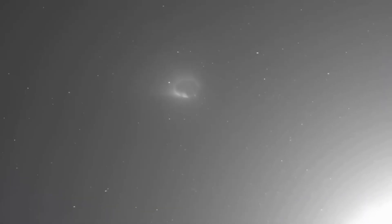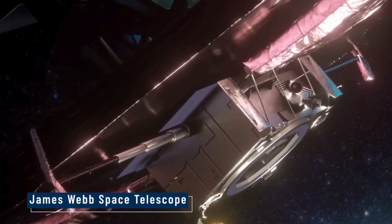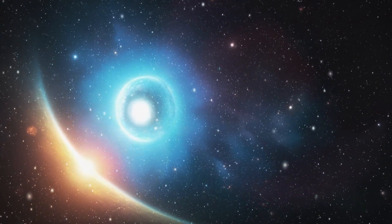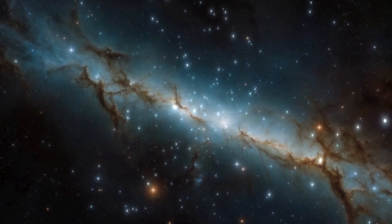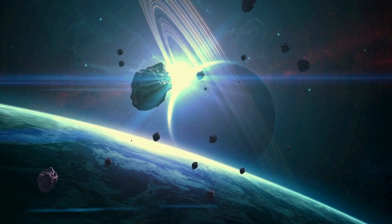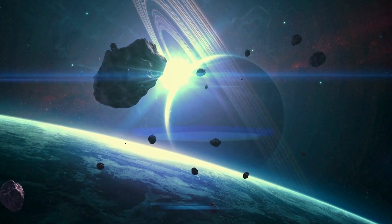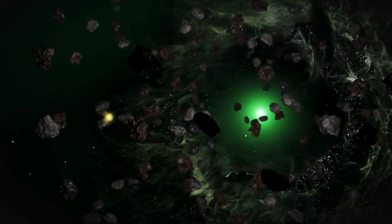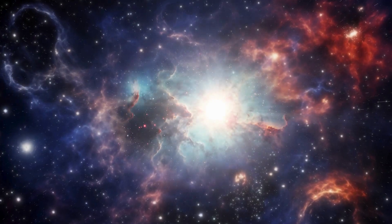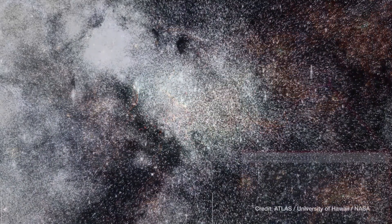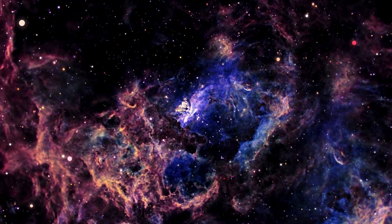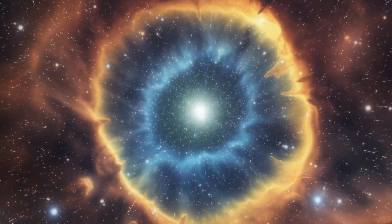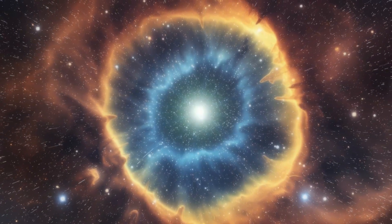The thought of 3I-Atlas striking Earth is the kind of nightmare that feels too big to grasp. Picture a rock the size of a small city slamming into our planet at 68 kilometers per second. The impact would unleash energy beyond comprehension, more than a billion nuclear bombs, a cataclysm that would dwarf the asteroid that wiped out the dinosaurs 66 million years ago. That ancient rock, just 10 kilometers wide, sparked wildfires, tsunamis, and a global winter that choked the skies and starved entire species. 3I-Atlas, twice as large and ten times faster, could end civilizations in a heartbeat.